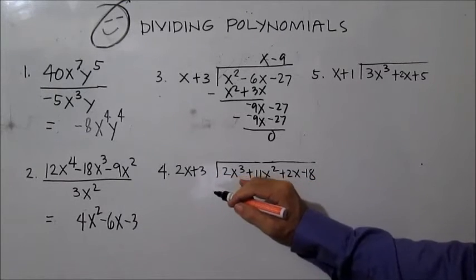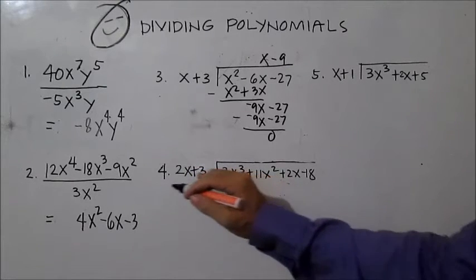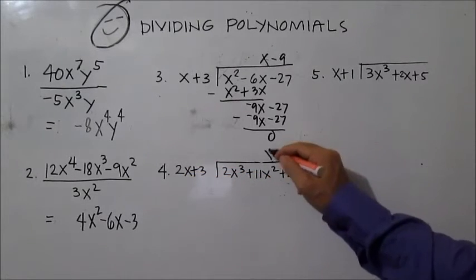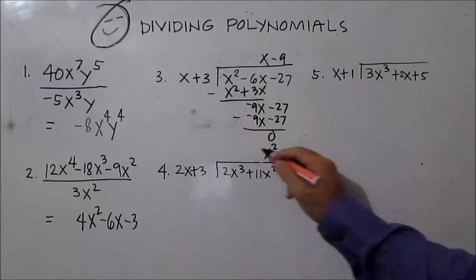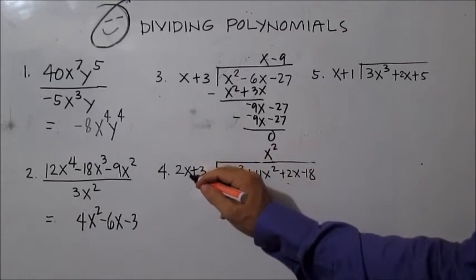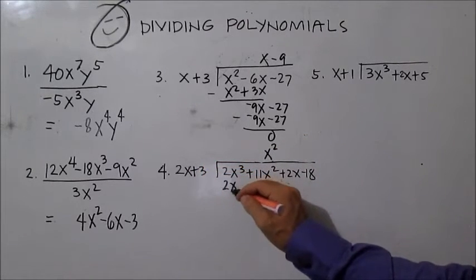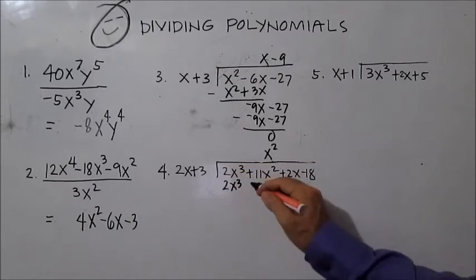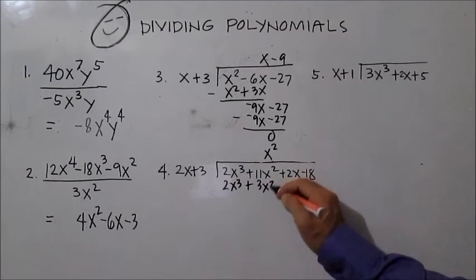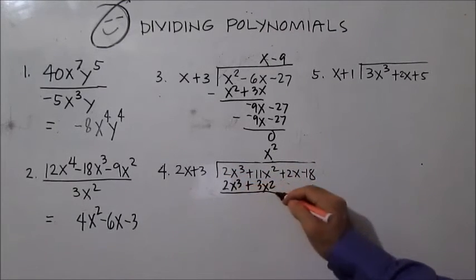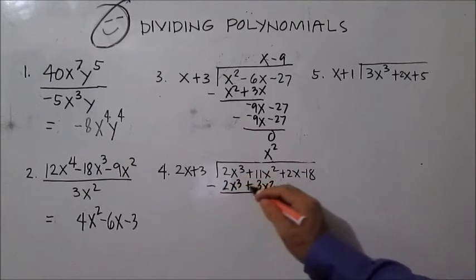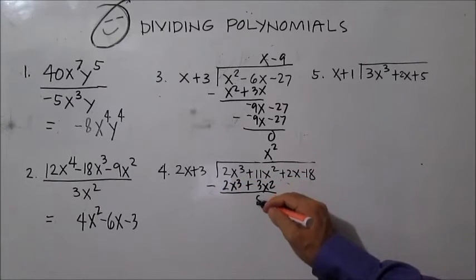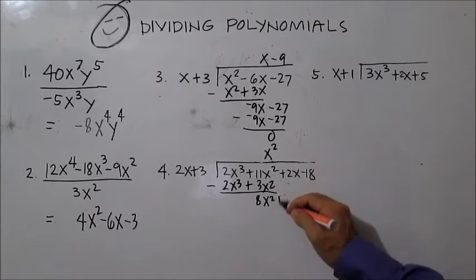Divide the first terms: 2x cubed divided by 2x is x squared. Then x squared times 2x is 2x cubed, and x squared times 3 is 3x squared. Subtract — this is 0. Then 11x squared minus 3x squared is 8x squared. Bring down.